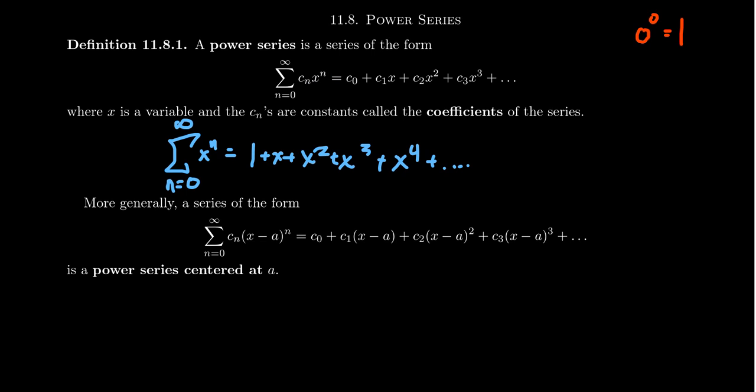We can also generalize this notion of power series a little bit. One thing you'll notice is that in the previous videos when we talked about series, we nearly always started our series at 1. But in this context of power series, we nearly always want to start our series at 0. This is because our functions are allowed some type of constant term, and that will be taken care of with n equals 0.